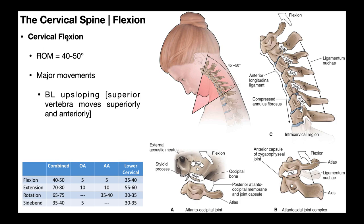For the range of motion of cervical flexion, the combined is about 40 to 50 degrees. The lower cervical spine — levels C2-3 down through about C7-T1 — contributes about 35 to 40 degrees of that total range of motion. The atlanto-occipital joint and the atlanto-axial joints each contribute five degrees. So by a large margin, the lower cervical spine contributes the vast majority of that range of motion.